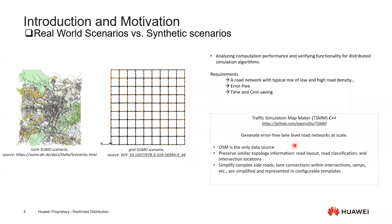which is a C++ code-based tool and published in GitHub under MIT license. The goal of our tool is to generate an error-free lane-level road networks at scale. It takes only OpenStreetMap data as the only data source, and it can preserve the similar topology information like the road layout, the road classifications, and intersection locations.